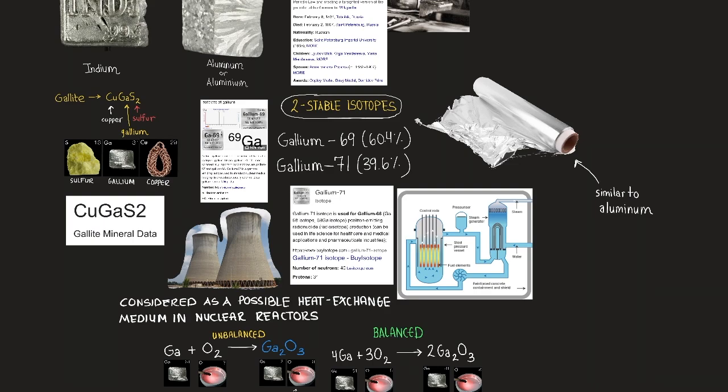Gallium remains a liquid phase over a temperature range of about 2000 degrees Celsius or about 3600 degrees Fahrenheit, with a very low vapor pressure up to about 1500 degrees Celsius or about 2700 degrees Fahrenheit, the longest useful liquid range of any element. The liquid metal clings to glass and similar surfaces. The crystal structure of gallium is orthorhombic.